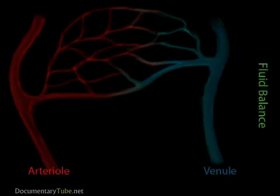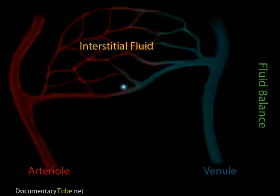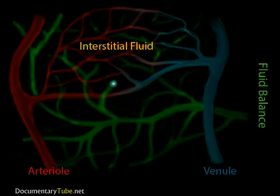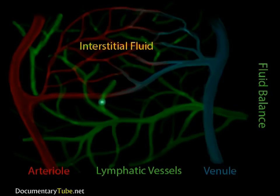From your understanding of the circulatory system, you know that the blood passes through the arteries, arterioles, and then the capillaries. The capillary walls allow the fluid portion of the blood to exit into the surrounding tissues. Once the fluid leaves the capillaries, it is called interstitial fluid. About 90% of this fluid will diffuse back into the capillaries because of the difference in concentrations. However, about 10% of the fluid will enter the open-ended lymph vessels. Once the fluid has entered the lymph vessels, it is now called lymph.